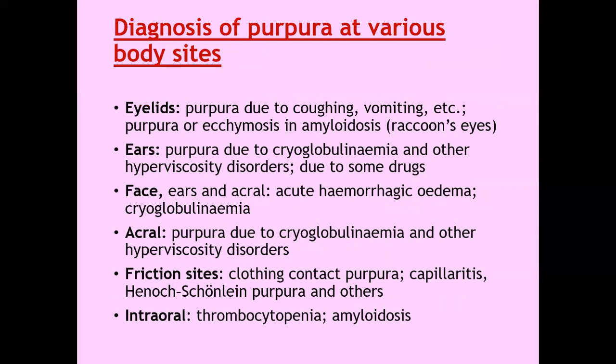How can the site of purpura help establish the diagnosis? Eyelid purpura can be due to coughing or vomiting, especially the ecchymosis seen in systemic amyloidosis, popularly known as raccoon eyes. Purpura in the ears can be due to cryoglobulinemia and other hyperviscosity disorders and sometimes drugs. On the face, ears, and acral areas: acute hemorrhagic edema and cryoglobulinemias. Acral purpura can be cryoglobulinemias and other hyperviscosity disorders. On friction sites: clothing contact purpura, capillaritis, and others. Intraoral purpura can be because of thrombocytopenias or amyloidosis.